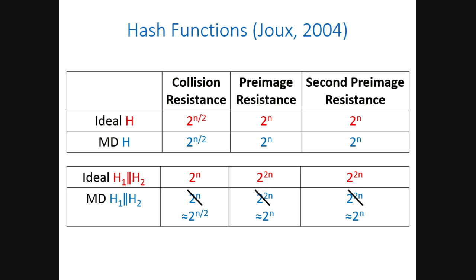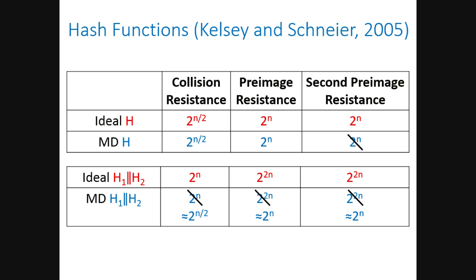In 2005, Kelsey and Schneier showed that a Merkle-Damgård hash function itself was not ideal, presenting a second pre-image attack on this construction that is faster than 2^n. This attack will be reviewed quickly because it is used later in the talk.